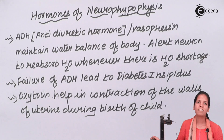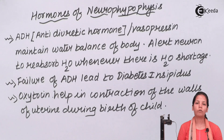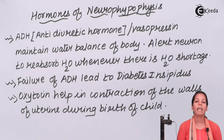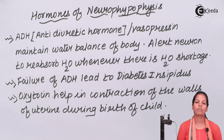So students, in this part of the chapter we came across the hormones of neurohypophysis, which are ADH as well as oxytocin. I hope you are clear with this concept. Thank you.